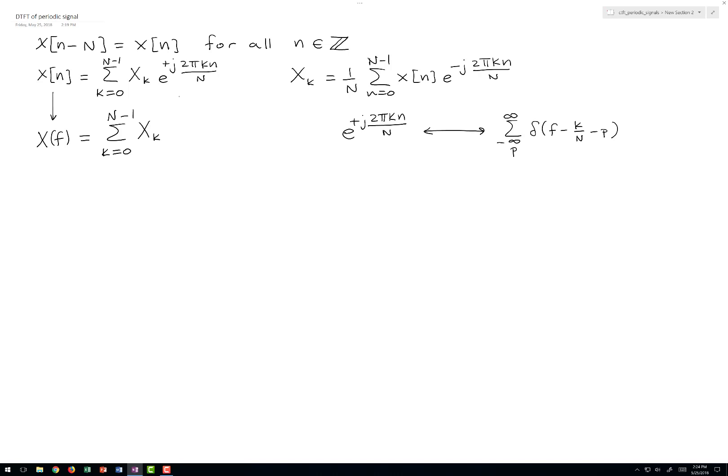So if we insert that into the formula here, we'll have a sum from minus infinity to infinity on p, delta f minus k over N minus p. And we're done. This is a valid Fourier transform expression.